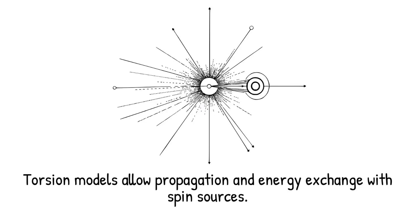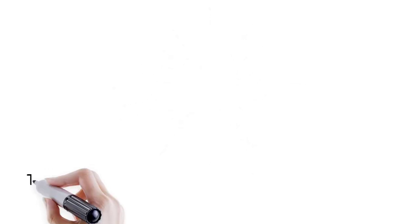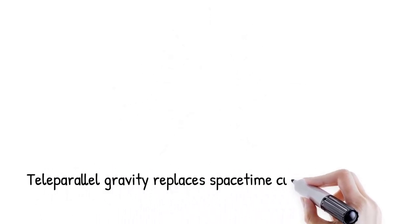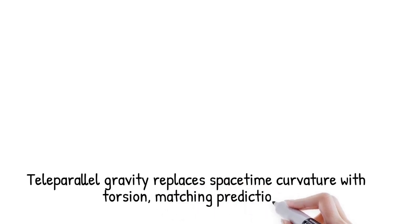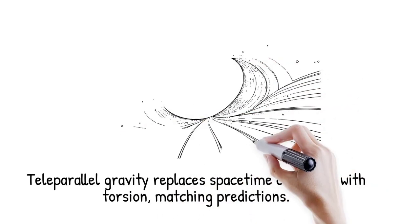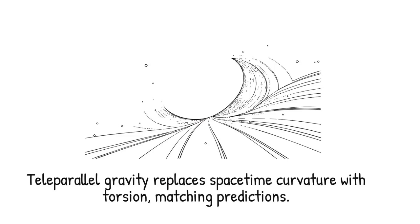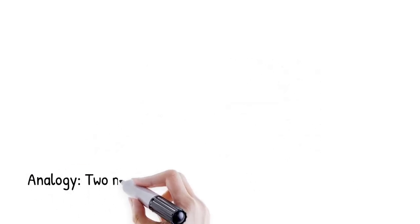The teleparallel equivalent of general relativity replaces space-time curvature with torsion while reproducing all standard gravitational predictions, like having two different maps of a landscape, one uses hills and valleys, the other uses twisted pathways, yet both guide you to the same destination.